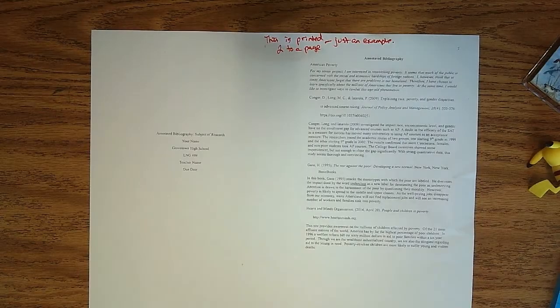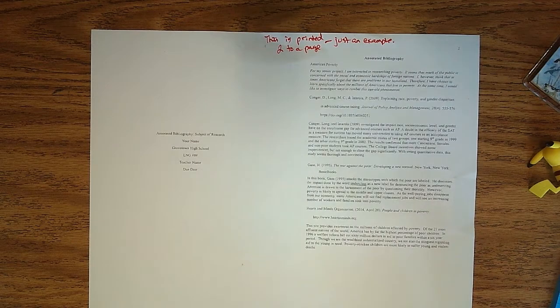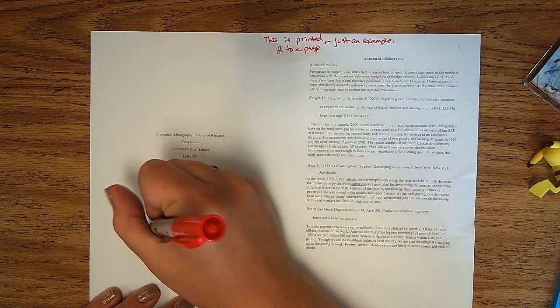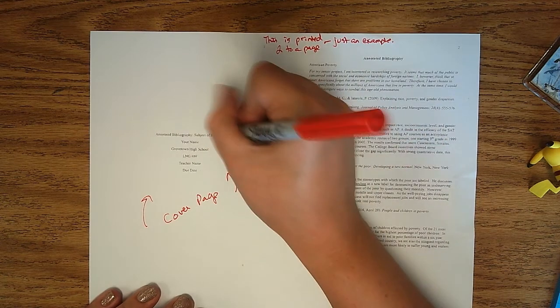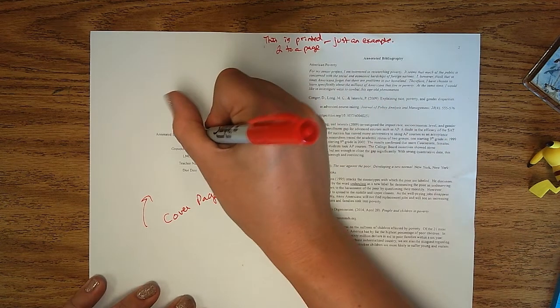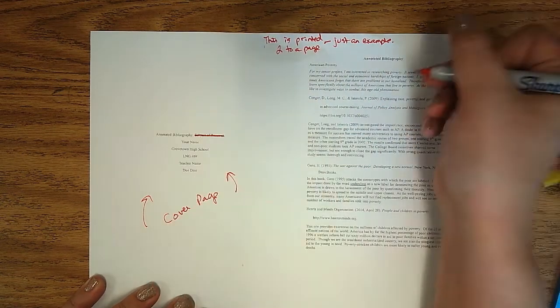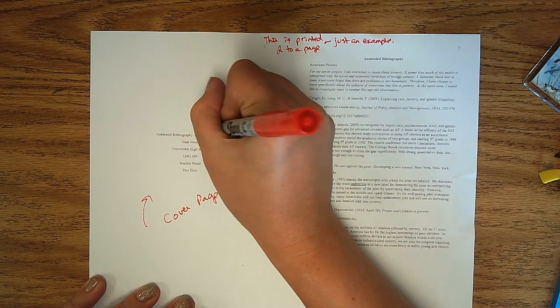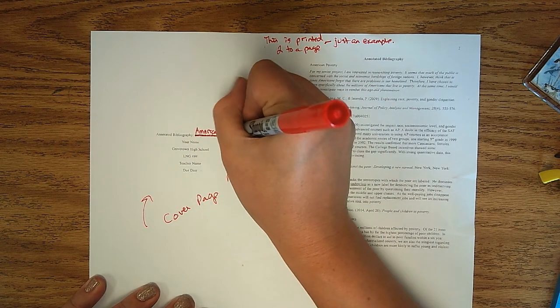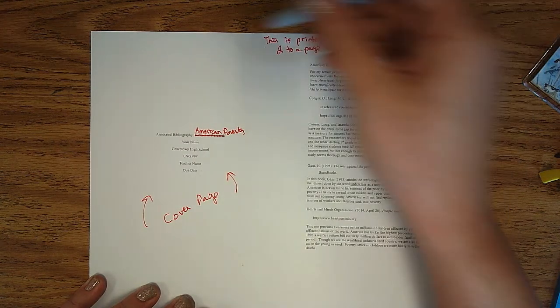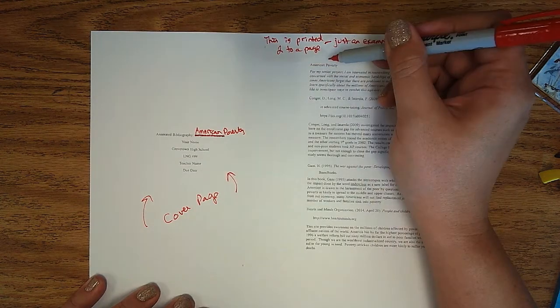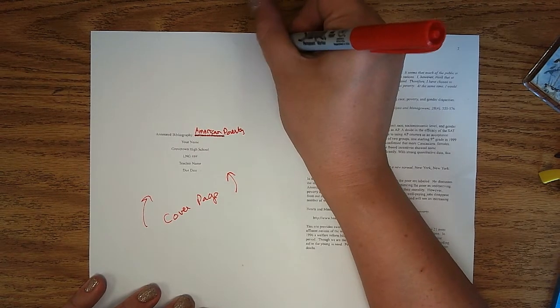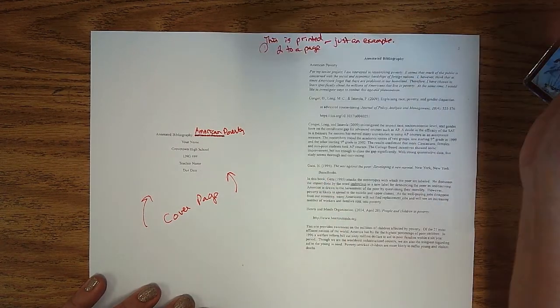So in APA format, you're going to have a cover page. That's what this is. And that cover page is going to have all of this information here. Whatever the subject of your research. So this example is using poverty. You're going to write that right there. Now some people might be making a big deal about headers at the top of these papers. Where like there's the page number. The page number is like right up here. It's super tiny. I'm sorry. Page number.